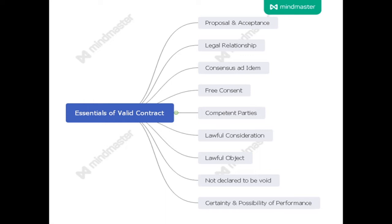Now, these are some essentials of a valid contract. There are different types of contract: void contract and valid contract. Void means which is not legal; valid means which is legal. For a contract to be called a legal contract, certain parameters must be fulfilled: proposal and acceptance, legal relationship, free consent, competent parties, lawful consideration, lawful object, not declared to be void, and certainty and possibility of performance.